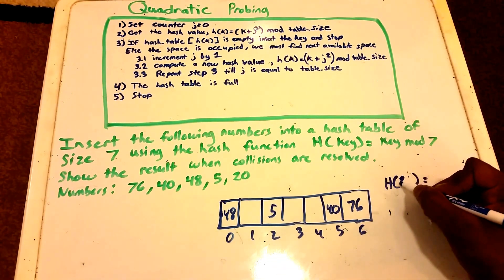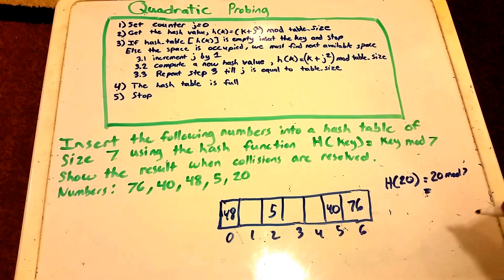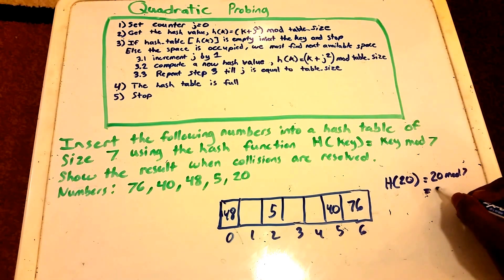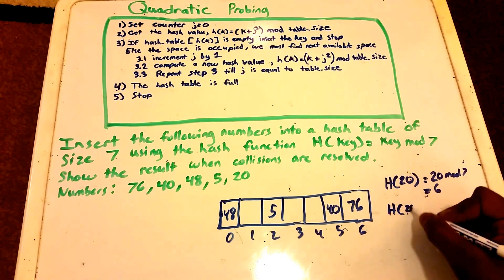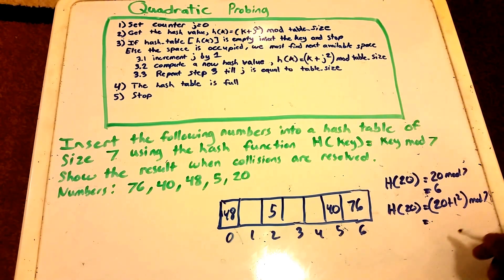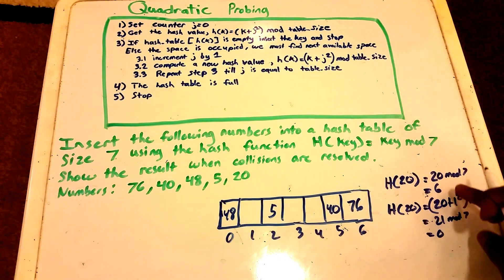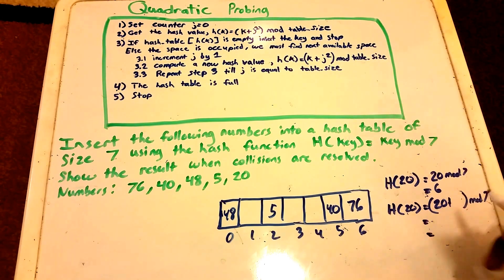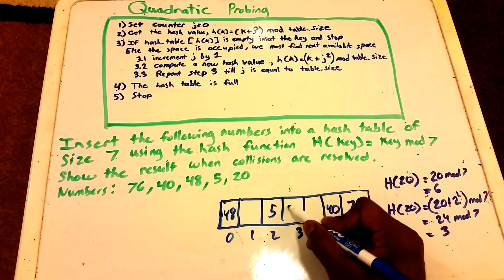Last but not least, we have the value 20. Using the hash function: 20 mod 7 = 6 — another collision. We increment J to 1: H(20) = (20 + 1²) mod 7 = 21 mod 7 = 0 — already taken. We increment again, J = 2: H(20) = (20 + 2²) mod 7 = 24 mod 7 = 3. So at index 3 we place the value 20.